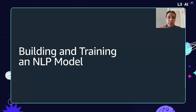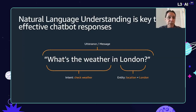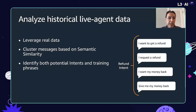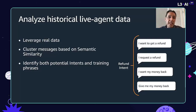Let's talk about the NLP models and how we go about building those. With natural language understanding, if I were to say 'what's the weather in London?', that's the utterance. The intent is 'check weather,' and the entity is location equals London. If you have historical data that you can mine, this is the best place to start — there's not really a substitute for real data. One approach is semantic similarity clustering using tools like TensorFlow's universal sentence encoder or BERT, which can cluster all the phrases users send to your live agents and help identify potential intents as well as training phrases.